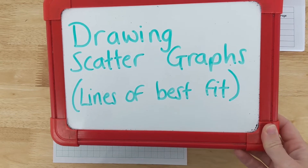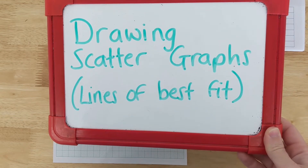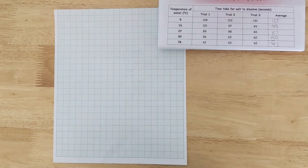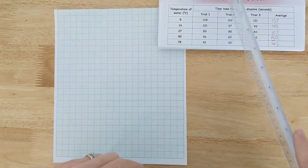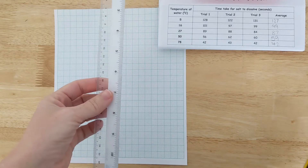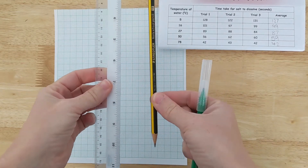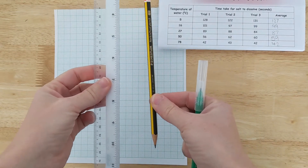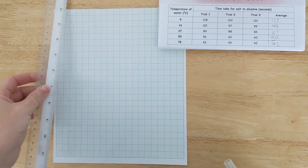Right, drawing scatter graphs, particularly looking at lines of best fit. So I've got my graph paper and here's my results table that I'm going to use. And I've got a ruler and a pencil. Now just to make it easier to follow the video, I'm going to use a pen instead of pencil.